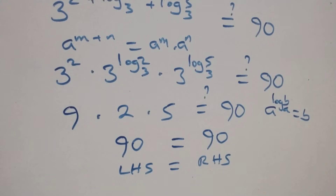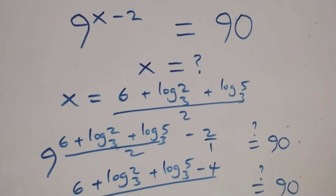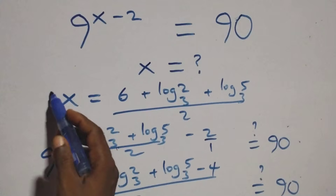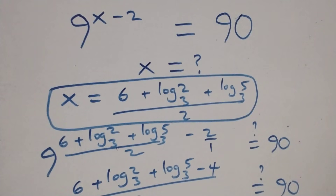Therefore, we conclude that x equals six plus log base three of two plus log base three of five, all over two, satisfies the given problem. Thank you for watching — don't forget to subscribe for more videos, turn the notification bell on, share this video, give a thumbs up, and put your comments. See you in the next class, bye for now.